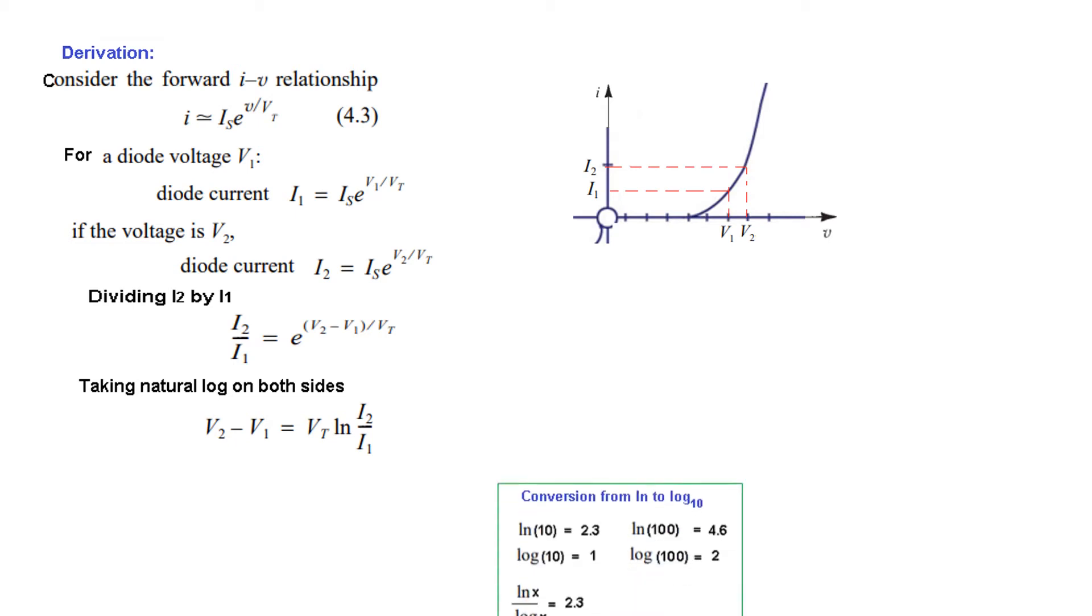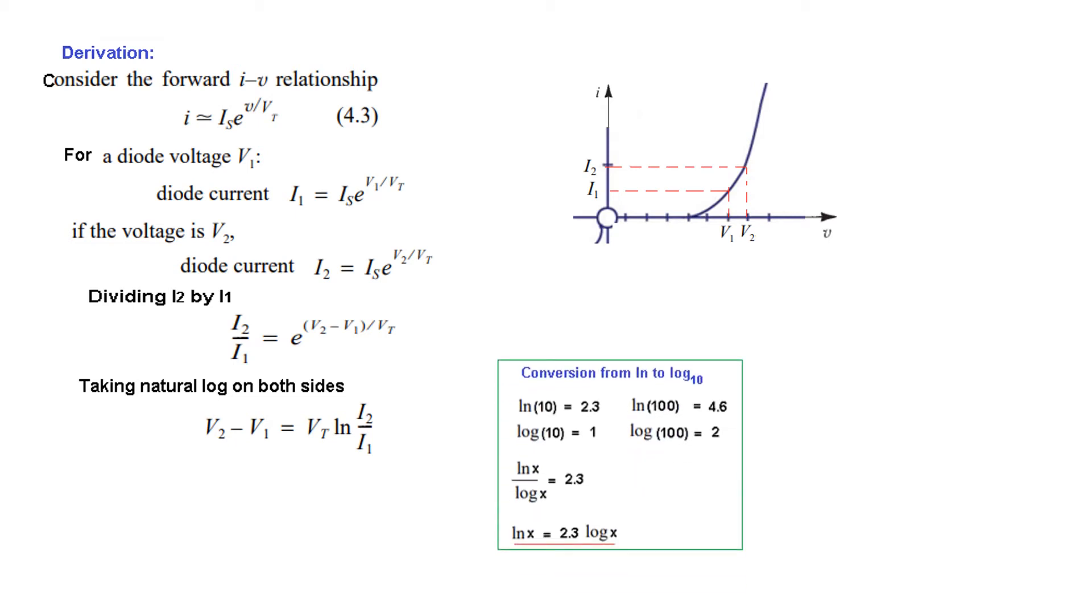We have natural log, so we need to convert to log base 10. Log natural equals 2.3 times log base 10. For example, ln(10) equals 2.3, and ln(100) equals 4.6 while log base 10 of 100 is 2.